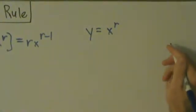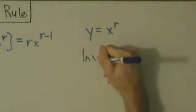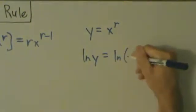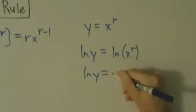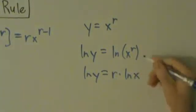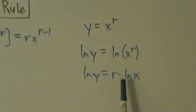Now what we're going to do is take a natural log of both sides. Natural log of y equals natural log of x to the r. So this means natural log of y equals r times the natural log of x. Because remember, exponents like that can be pulled out as factors.